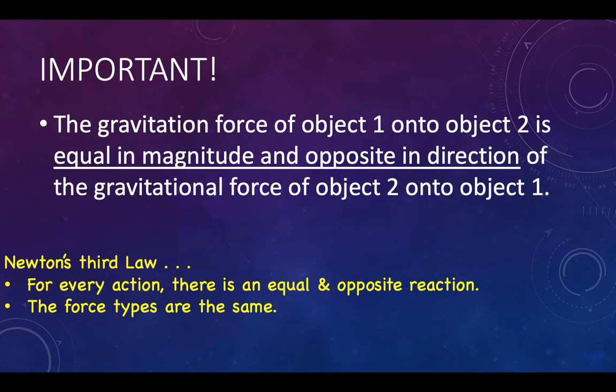Remember, the gravitational force of object 1 on object 2 is equal in magnitude and opposite in direction to the gravitational force on object 2 by object 1. That's a restatement of Newton's third law — for every action there's an equal and opposite reaction, and the force types are the same. Your weight is your pull toward the Earth, and because you have a gravitational field, you are also pulling the Earth toward you.